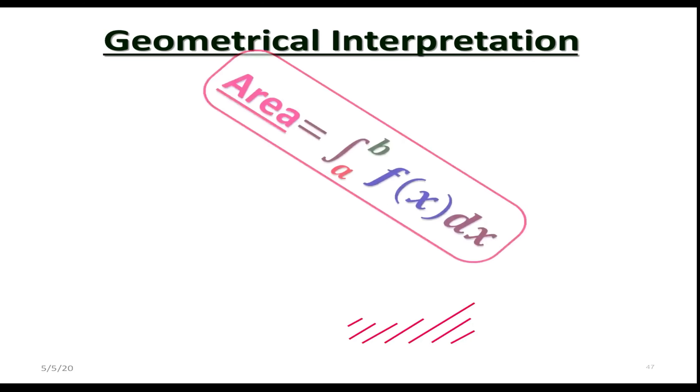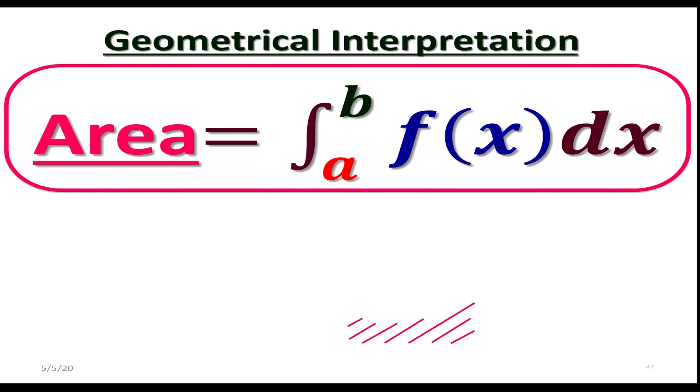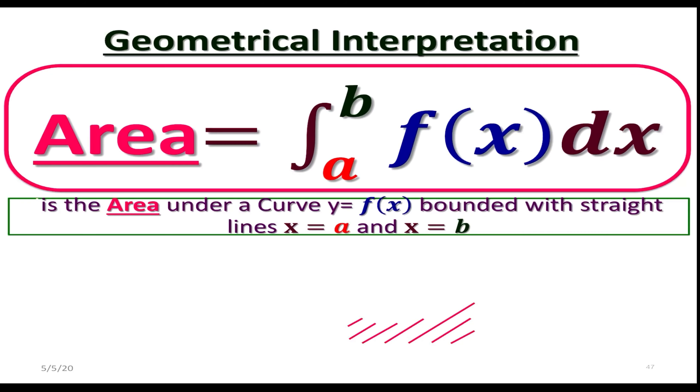Let's get into geometrical interpretation of a definite integral. Geometrically, a definite integral from a to b, f of x dx, simply means the area under a curve given by y equals f of x, bounded with two straight lines, x equals a, and x equals b.